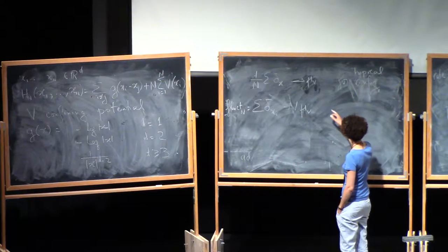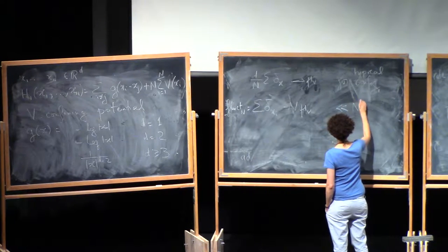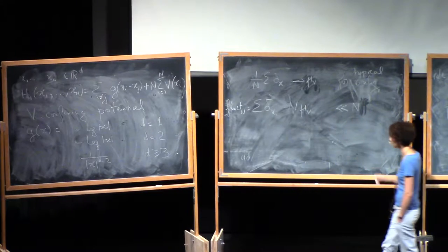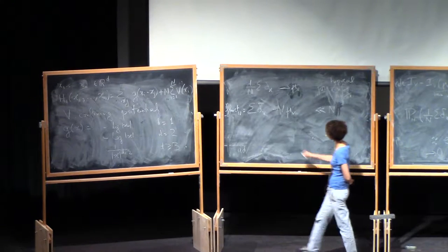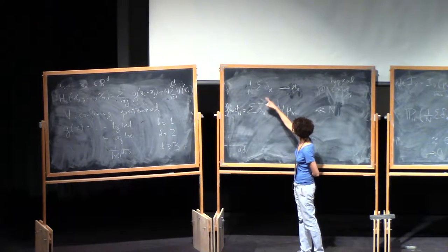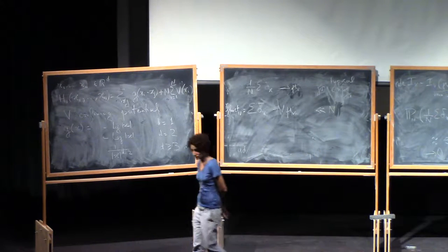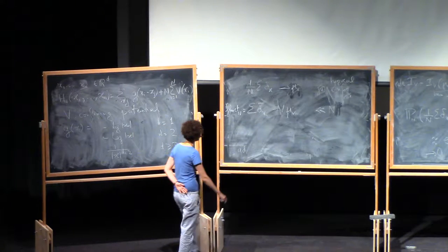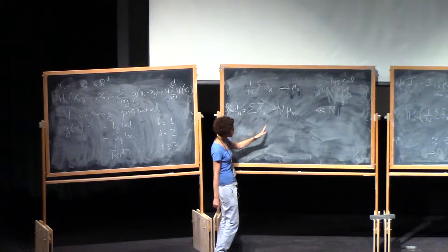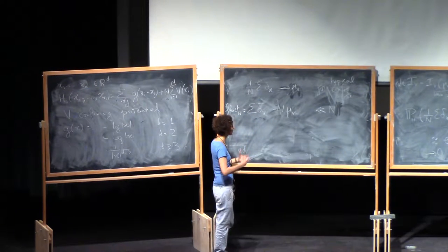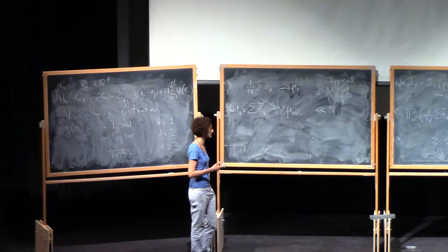I'm going to be interested in what you can call the fluctuations, which is the difference between the sum of Dirac minus n mu v. So we call this fluct n of a configuration. So this fluctuation, from what we've seen, we expect it to be much smaller than n in some norm that needs to be specified. Because we know that this converges to mu v. And the question is, can we do better?